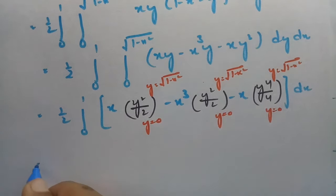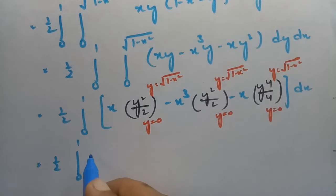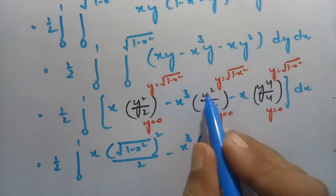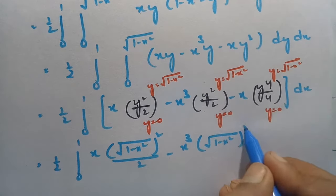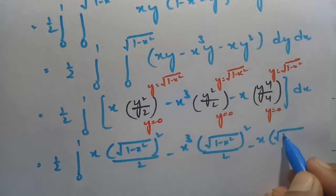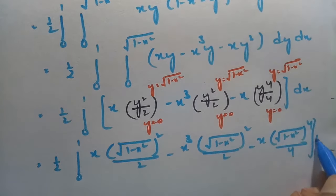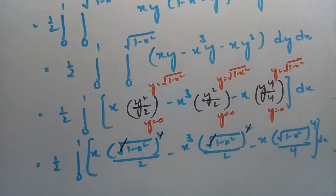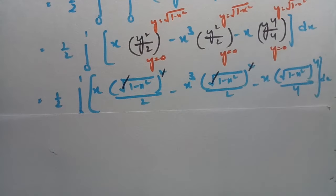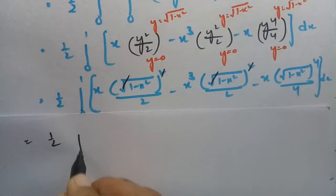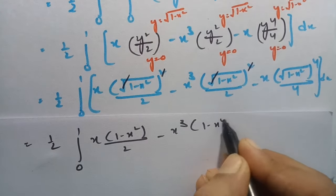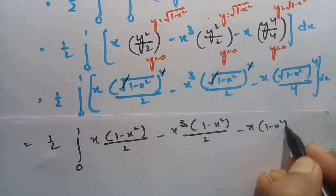Substituting the upper limit y=√(1−x²): we get (1/2) times integral from 0 to 1 of x·(1−x²)/2 minus x³·(1−x²)/2 minus x·(1−x²)²/4, all multiplied by dx.